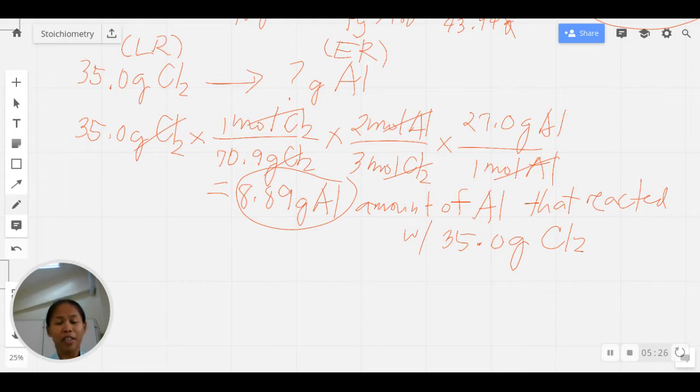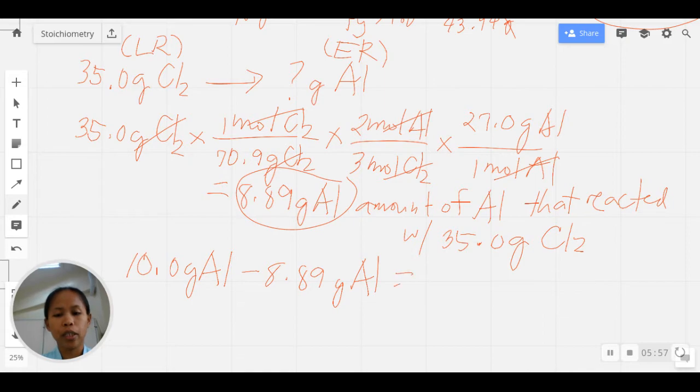How do we now know how much remains after the reaction? Simple: begin with the amount that you were given in the problem, which is 10.0 grams, and you know that not all the 10 will be used up, so you subtract it with the actual amount that was needed or that was used up in the reaction with CL₂. Subtract it with 8.89 grams Al, and you would get the excess to be 1.11 grams Al. This is the amount of Al that remains after the reaction.